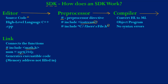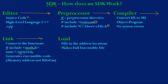After all of the functions have been linked, what is created is an executable code, but none of the memory addresses are filled in at this point. The next process is called loading. What loading does is fill in the address locations in that executable file and makes the file fully executable. And finally, the last process is execution — execution is when your program runs and you can see the results of your program.